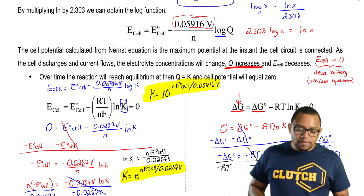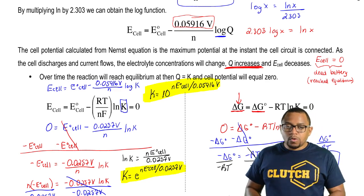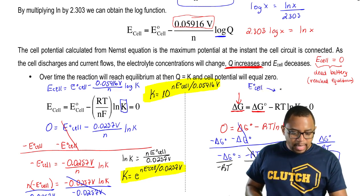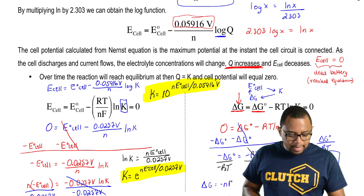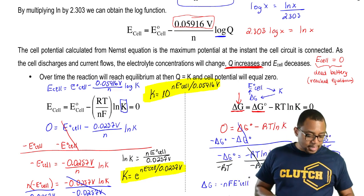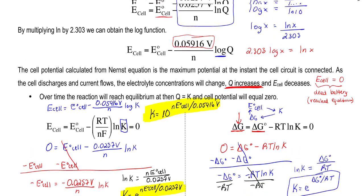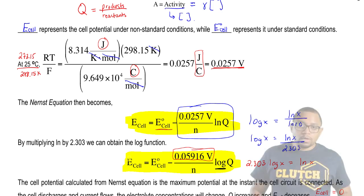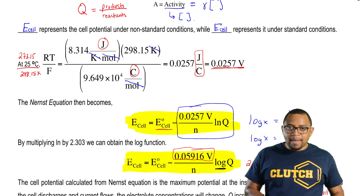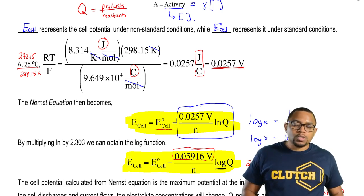These equations show the connections between cell potential, K, and delta G. We can also connect cell potential to delta G directly: delta G equals negative N times Faraday's constant times cell potential. We use the Nernst equation when concentrations are not equal to one molar. The Nernst equation can be written in two ways: using ln, or using log by multiplying by 2.303. Keep in mind the intricate dynamics of the Nernst equation and how it connects cell potential under standard and non-standard conditions.